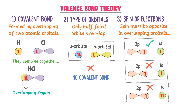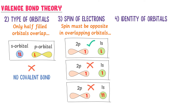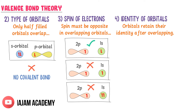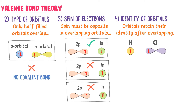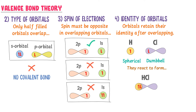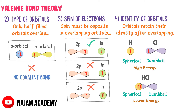The fourth point of VBT is the identity of orbitals. It teaches that orbitals retain their original identity after overlapping. For example, consider the S orbital of hydrogen (spherical) and the P orbital of chlorine (dumbbell-shaped). When hydrogen and chlorine react to form HCl, the S orbital remains spherical and the P orbital remains dumbbell-shaped — they retain their original identity. However, the energy of atomic orbitals is high before overlapping; once they overlap, they have lower energy within the molecule. Thus, VBT teaches us that orbitals retain their identity after overlapping.